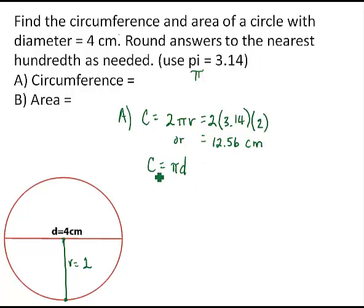If we use the other formula, pi times diameter, I just want to show you that gives you the same value. If we use the value of pi as 3 and 14 hundredths and multiply by the diameter, which is 4,